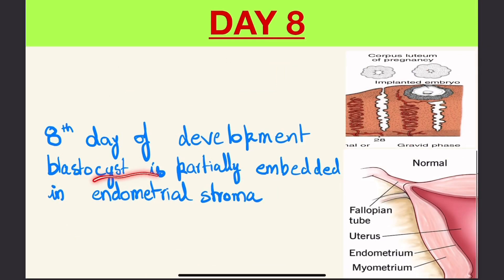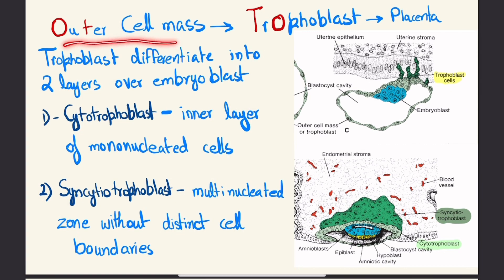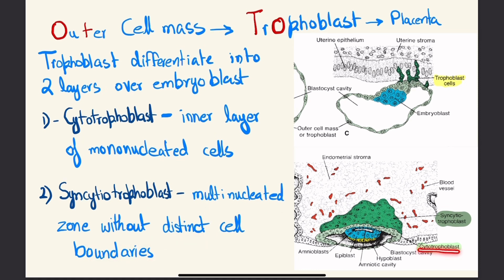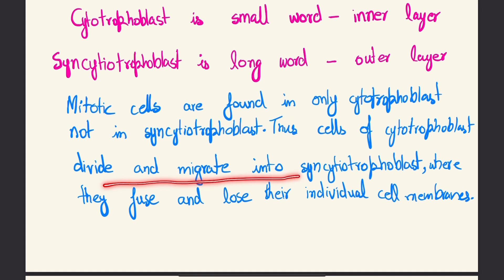At day 8 of development, the blastocyst is partially embedded into the endometrial stroma. The outer cell mass develops trophoblast, which develops the placenta. Trophoblast differentiates into two layers: cytotrophoblast — the inner mononucleated cell layer — and syncytiotrophoblast — a multi-nucleated zone without distinct cell boundaries. Cytotrophoblast is the inner layer; syncytiotrophoblast is the outer layer. Mitotic cells are found only in the cytotrophoblast; these cells divide, migrate into the syncytiotrophoblast, fuse, and lose their individual membranes.